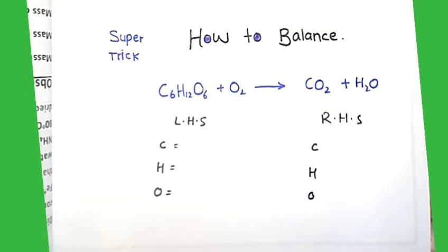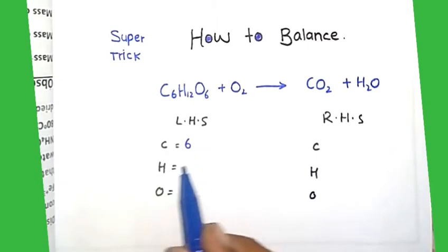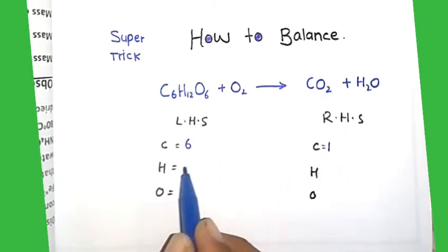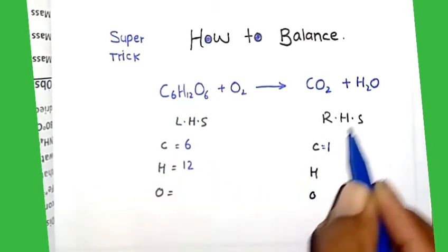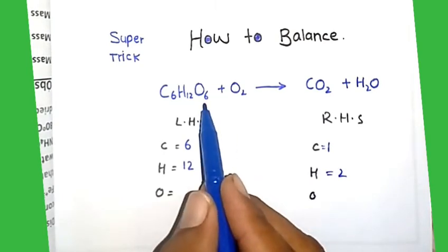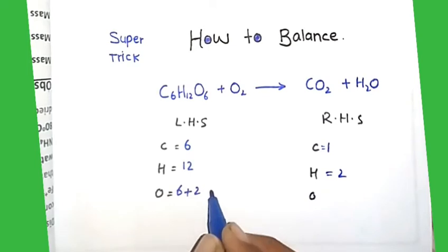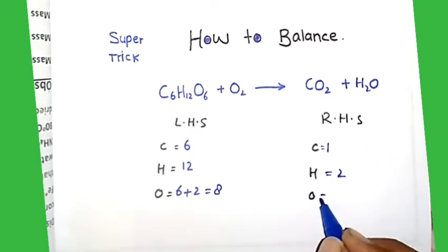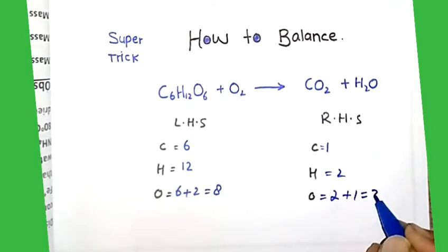How many elements of carbon? Here is six elements, and here is only one. And hydrogen is 12. Here the hydrogen is 2. And oxygen is 6 plus 2 equal to 8. Here the oxygen is 2 plus 1 equal to 3.